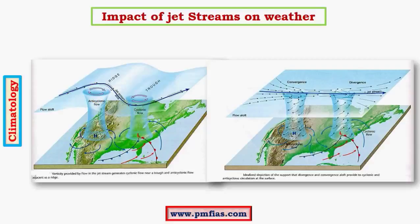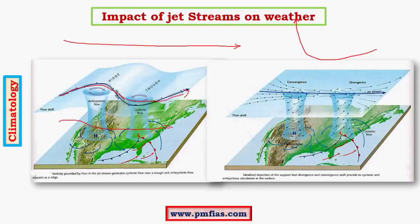Temperate cyclones move from west to east, whereas tropical cyclones flow from east to west and then shift towards the north at a particular latitude. The west-to-east direction of temperate cyclones is because of the westerlies and jet streams, which also flow from west to east.